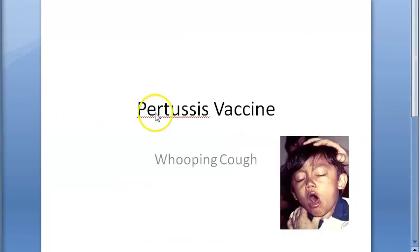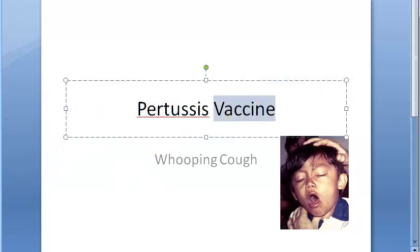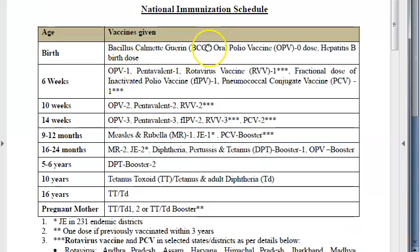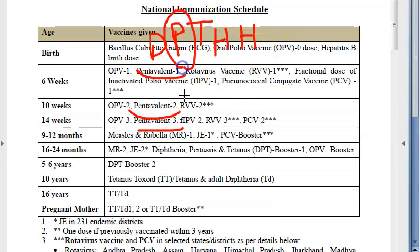As this is a bacteria-caused disease, there are antibiotics to treat it in the earlier stage. The pertussis vaccine — in the national immunization schedule you will see pentavalent, which contains DPT-HB-Hib: that is diphtheria, pertussis, tetanus, hepatitis B, and Haemophilus influenzae B. The P here is the pertussis.